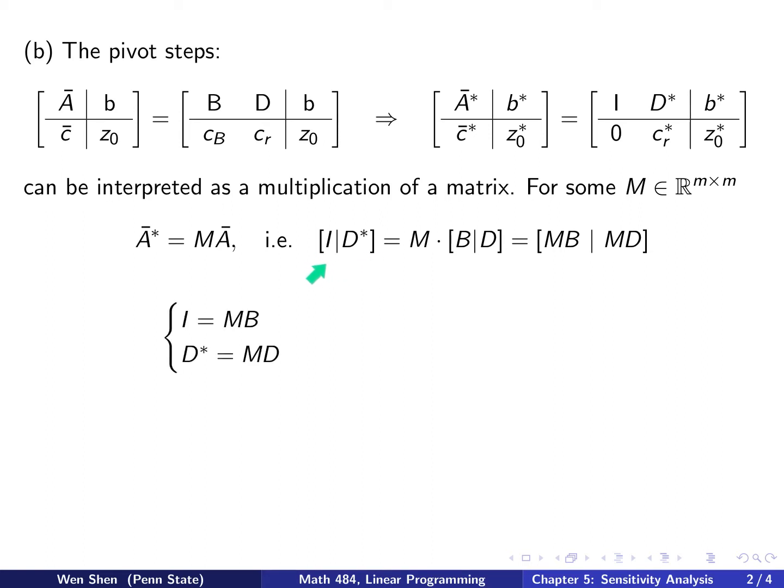If we want this matrix to equal that matrix, then each part must match. So I here must match MB, and D star must match MD. We can easily see that if M times B is an identity matrix, then they are inverse of each other. So M is exactly the inverse of B. And if M is the inverse of B, we can plug it in, and then D star is B inverse times D.